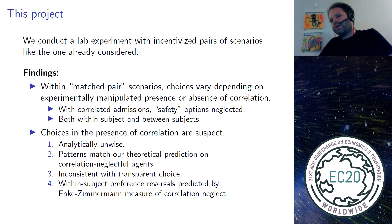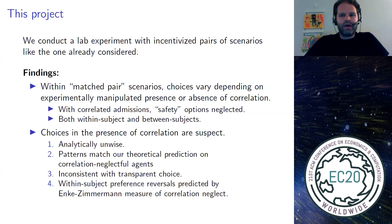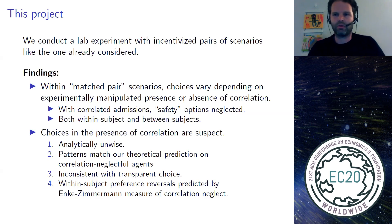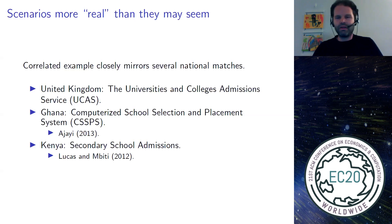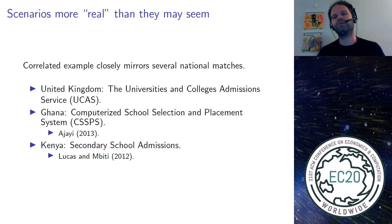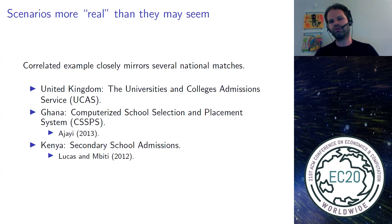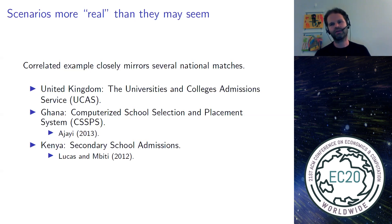I already hinted that the aggressive strategy is analytically unwise. In the rest of this talk, I'll try to convince you that choices under correlation are the ones you want to suspect as unwise or unintentional. The two scenarios I presented may seem simplistic or removed from reality, but in fact they closely mirror the situations in many national or citywide matches. In the paper, we review college admission in the United Kingdom, as well as high school admissions in Ghana and in Kenya.